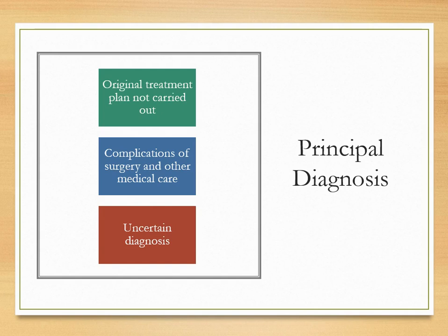Next up: uncertain diagnoses. When the provider at the time of discharge uses terms such as probable, suspected, likely, questionable, possible, still to be ruled out, or other terms indicating uncertainty, you code the condition as if it existed or was established. The basis for this guideline is that diagnostic workup took place, arrangements for further workup or observation were made, and an initial therapeutic approach was taken corresponding most closely with an established diagnosis. This guideline only applies to inpatient admissions to short-term, acute, long-term care, and psychiatric hospitals.